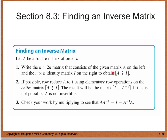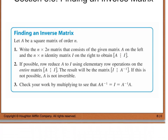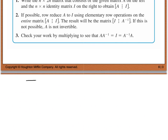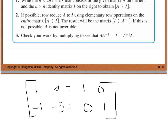Sometimes when we adjoin a matrix on the left-hand side and the identity matrix on the other side, you might get something that looks like — just as an example — a 2 by 2 such as 1, 4, negative 1, negative 3. We call this a doubly augmented matrix, and we put the identity matrix on the other side: 1, 0, 0, 1. Then we perform elementary row operations on the left side, applying the same operations to the right side, to find the inverse.